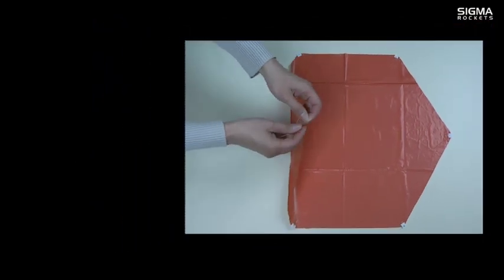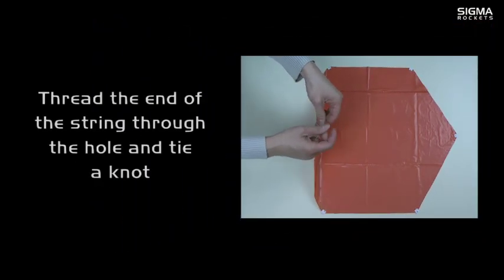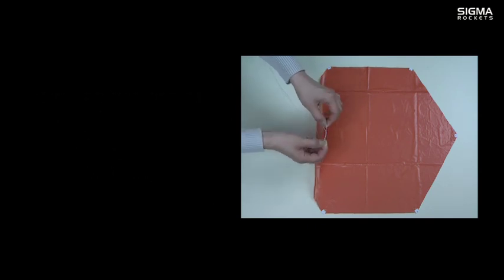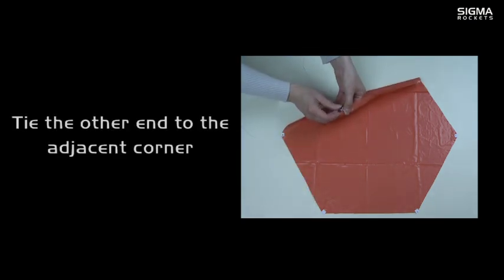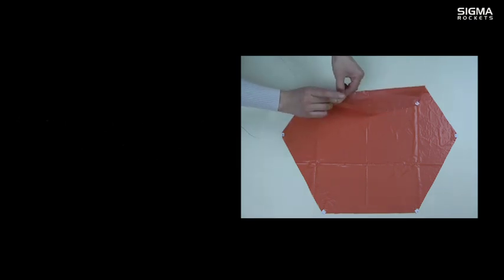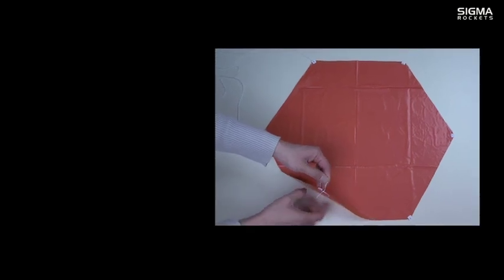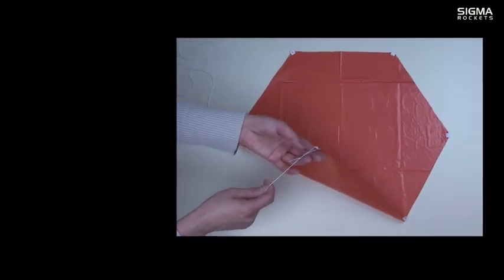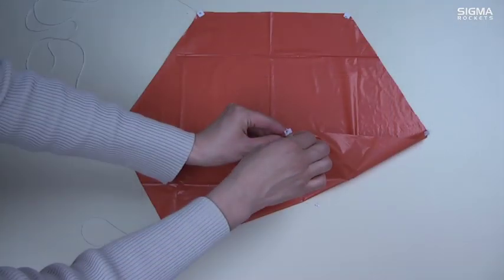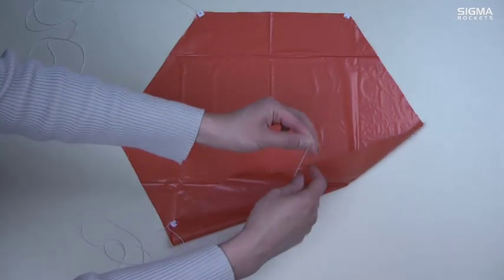Thread the parachute string through the hole and tie a knot. Thread the other end of the string to the adjacent corner and tie another knot. Continue until all the corners have strings tied through them.